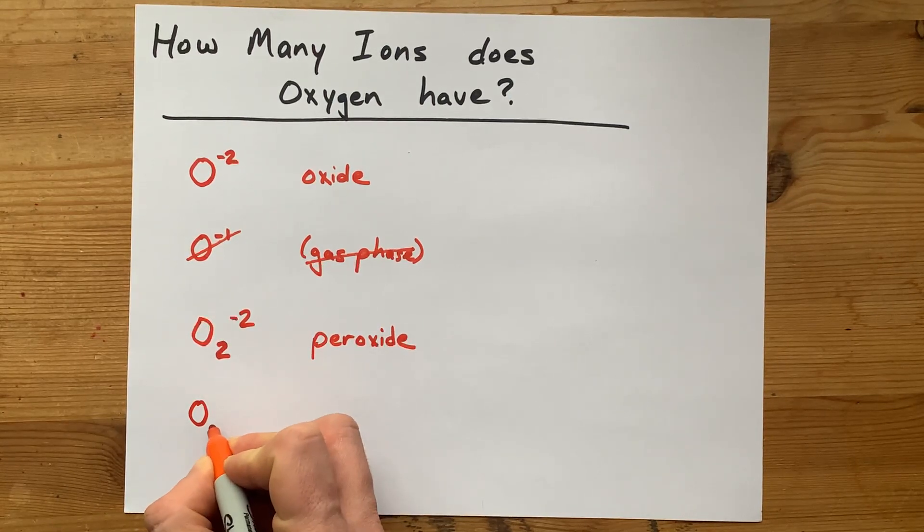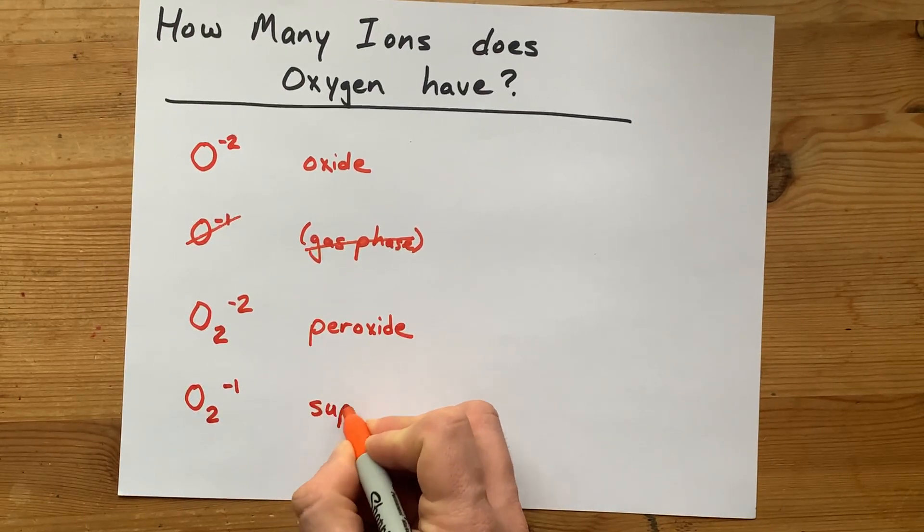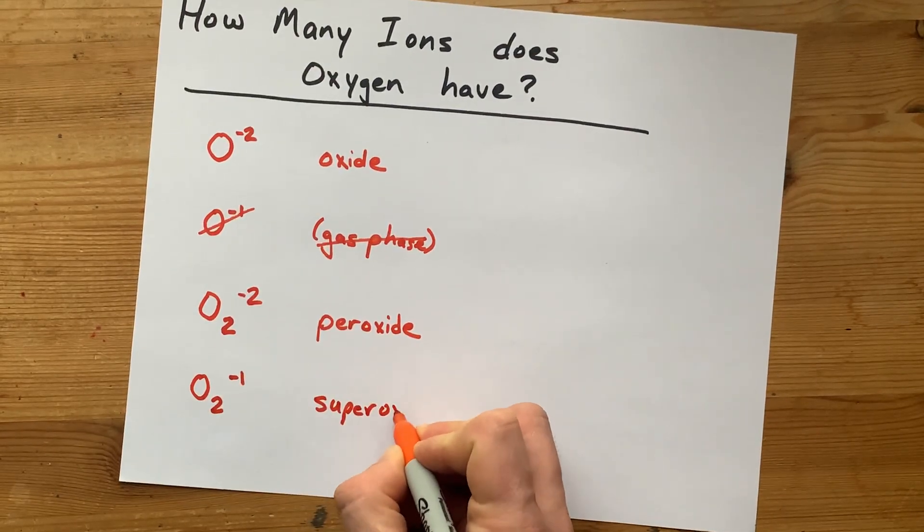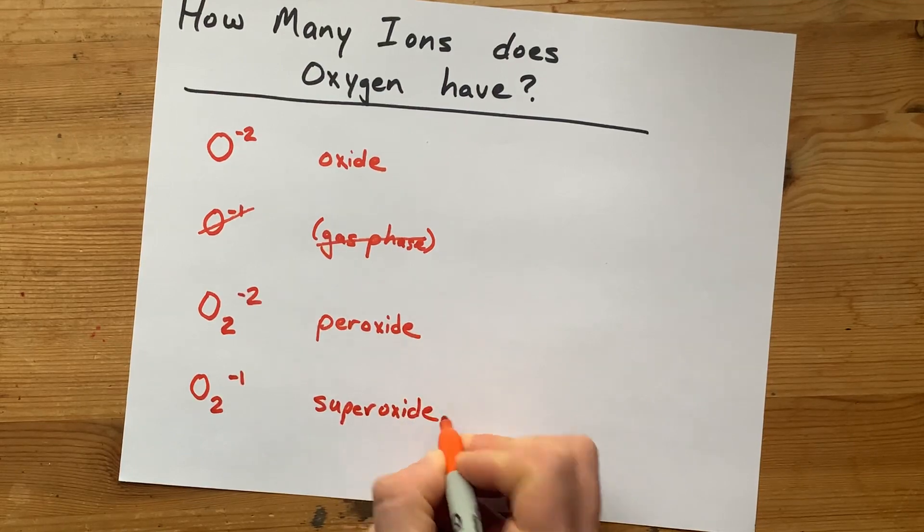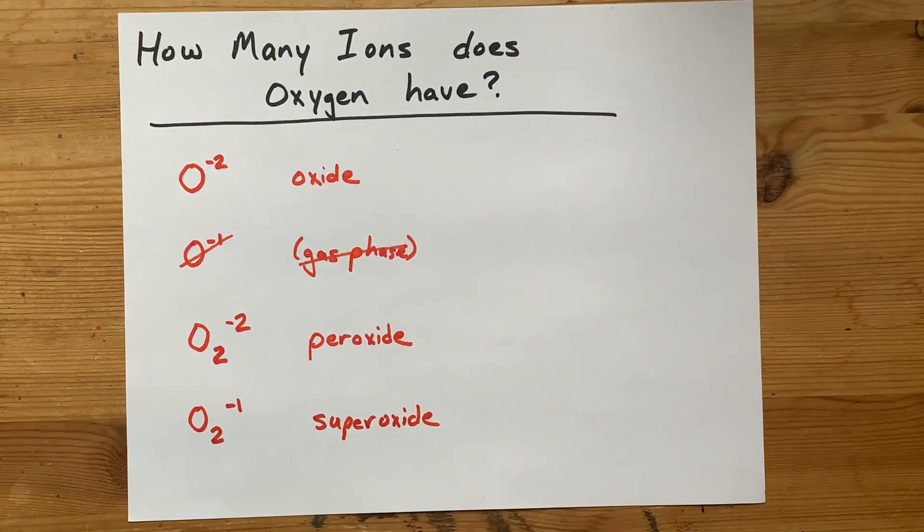The other one that I've seen teachers use is O₂ with a one minus charge. This has the name superoxide. I believe these can form when you burn potassium in a pure oxygen environment. It's also the same as gas phase oxygen, but with a single extra electron.